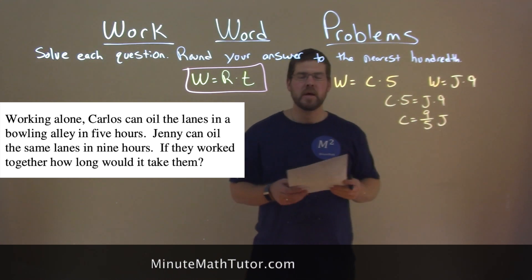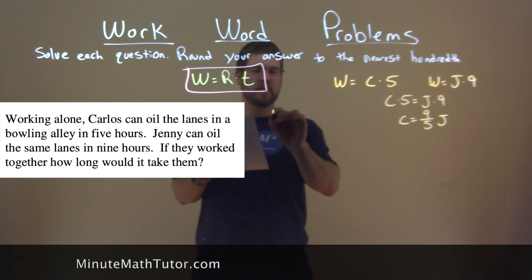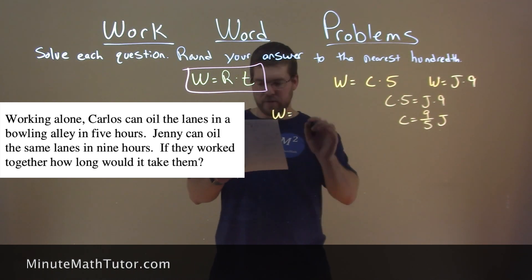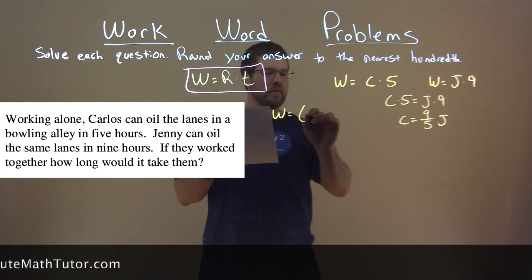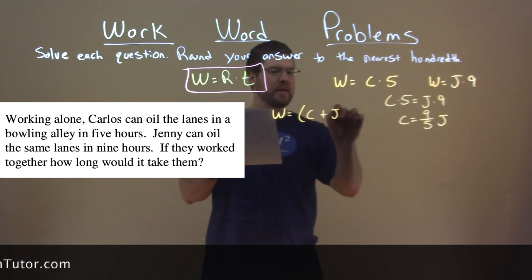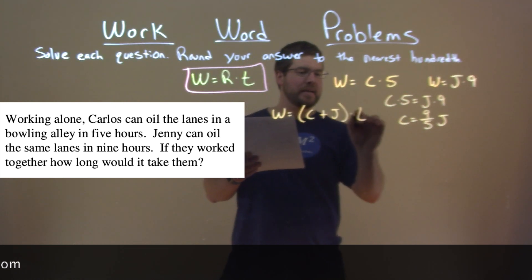All right, so now we need to make another equation. The same work, if they worked together, we would add their work rates, C plus J, and multiply that by time.